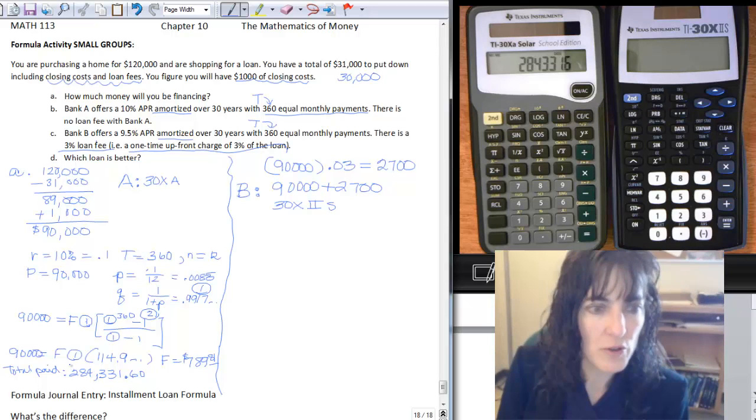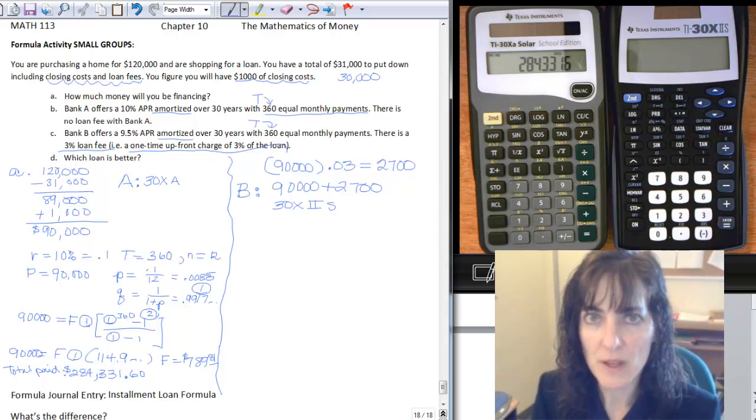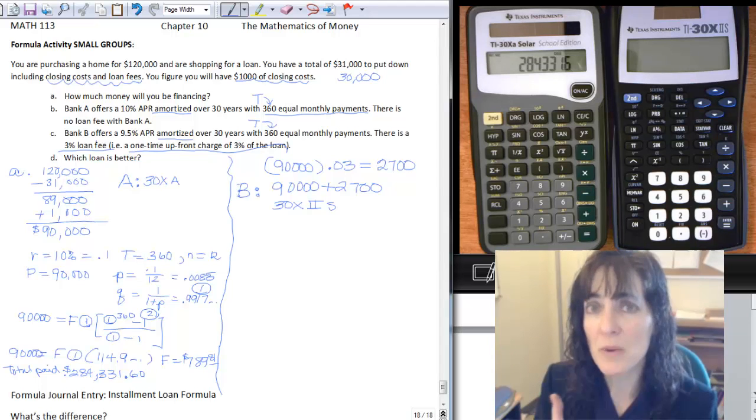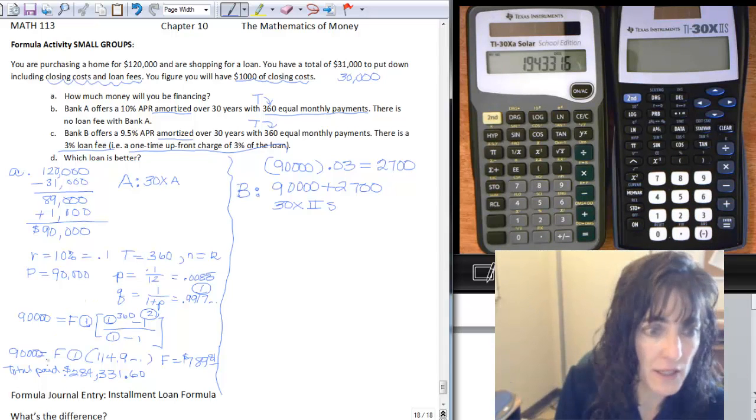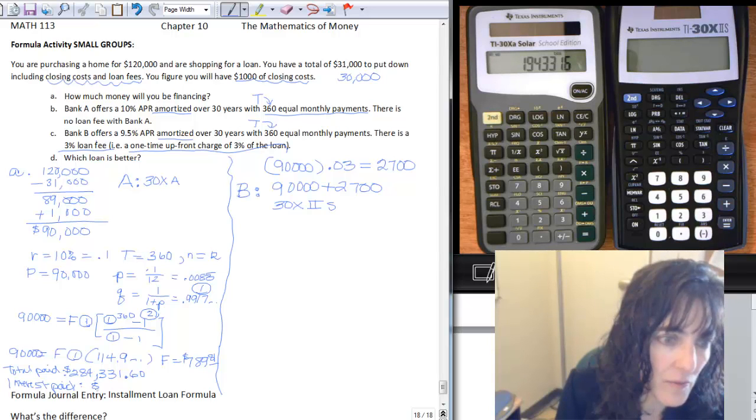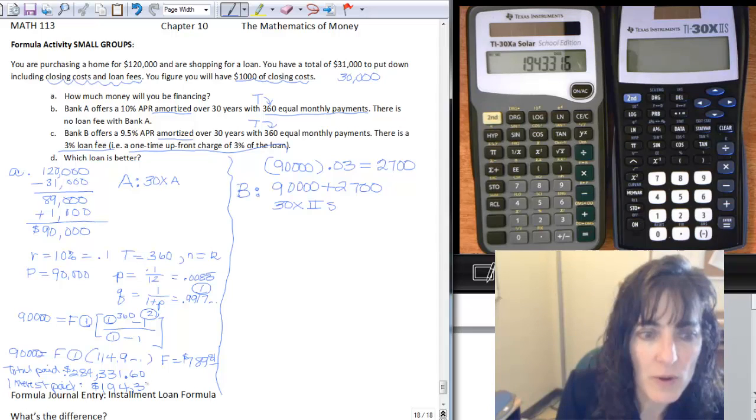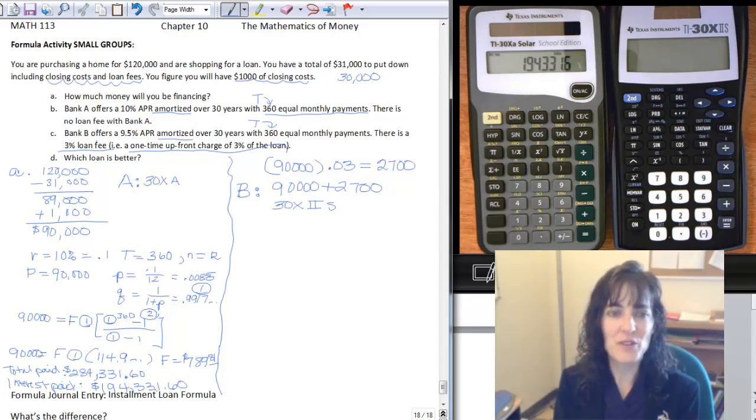So $284,331.60. And then to find out how much of the amount is interest, I just subtract off how much did I take the loan out for. I took the loan out for $90,000. So I subtract off the $90,000. And I get the total interest paid would be $194,331.60. So $194,331.60. That's crazy expensive to buy a house. We pay a ton of interest to do it.